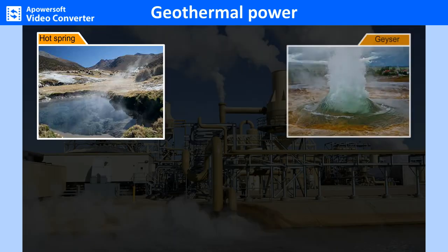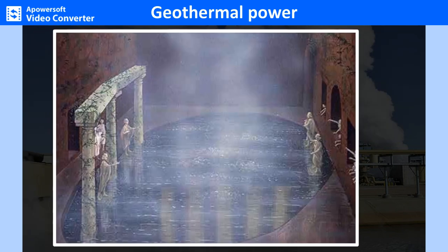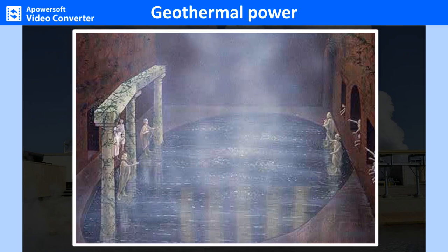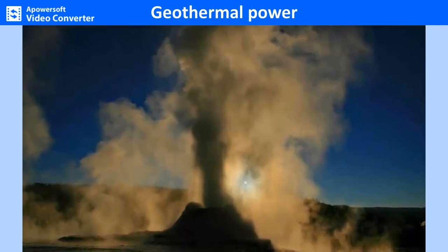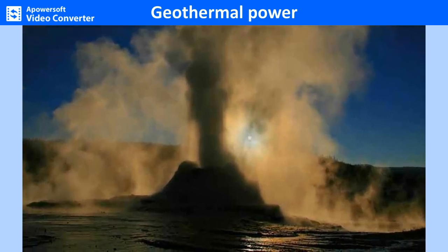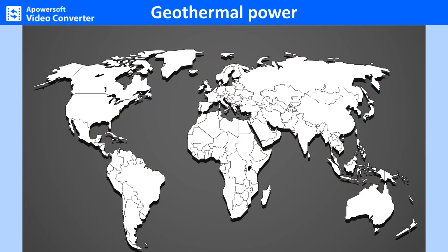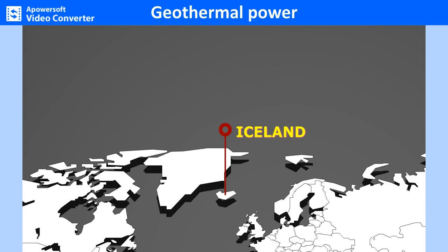Hot springs, geysers and volcanic gases are trapped to generate electricity. This power obtained by using heat from the Earth's interior is called geothermal power or geothermal energy. Ancient Romans used hot springs to heat their baths and homes; even today such use is found in Iceland, Turkey and Japan. Hot water and steam reservoirs under the Earth's surface at temperatures of more than 180 degrees Celsius are generally used by existing geothermal plants. The leading users are China, the US, Iceland, Turkey, New Zealand, Georgia, Russia and Japan. Nearly 19% of Iceland's electricity is generated from geothermal sources.